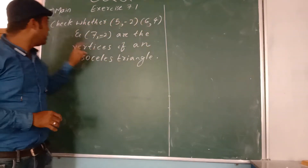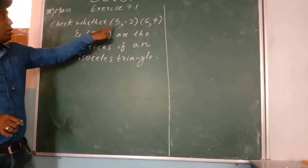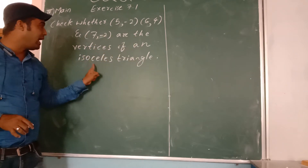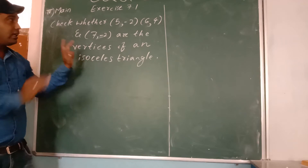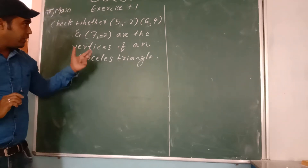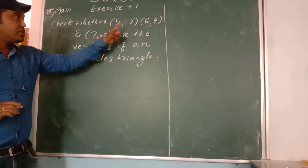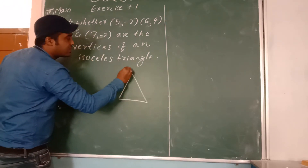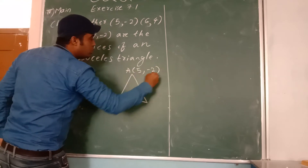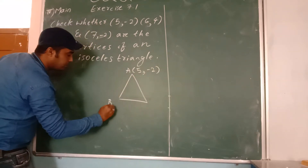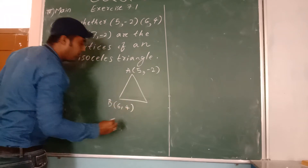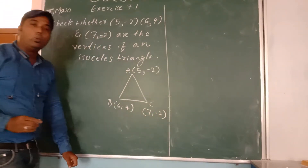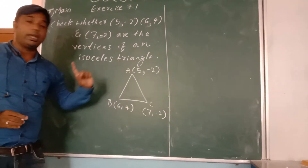We are discussing HSI 7.1, fourth main problem. Check whether 5 comma minus 2, 6 comma 4, and 7 comma minus 2 are the vertices of an isosceles triangle. They are asking us whether these 3 pairs of points form a triangle or not. We can come to know once we solve these 3 pairs of points by applying the distance formula. I will mark this as A at 5 comma minus 2, B point as 6 comma 4, C point as 7 comma minus 2. Now one by one I will apply AB, BC, and CA, the distance formula.